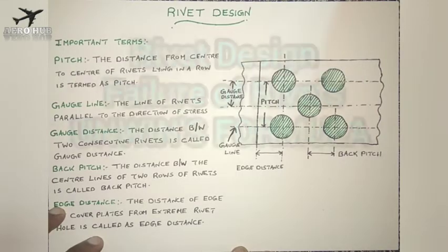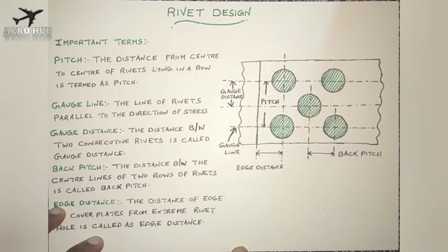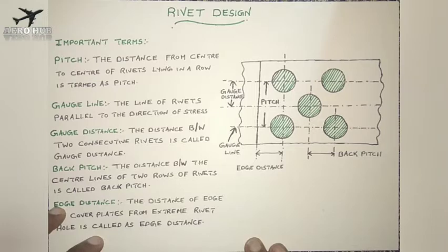Hello everyone, welcome back to AeroHub and welcome to the series of lectures in aerospace structures. In the previous lecture we discussed about the types of rivet as well as the bolt used in airframe design. In this lecture we will discuss about the rivet design as well as the failure modes affecting the rivet design. To understand rivet design we need to know certain important terms concerned with rivet design.